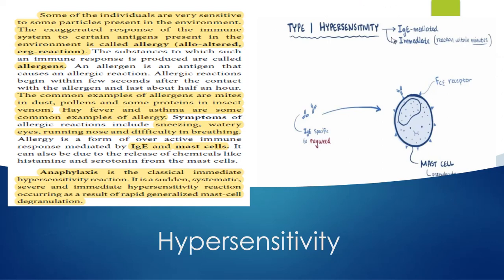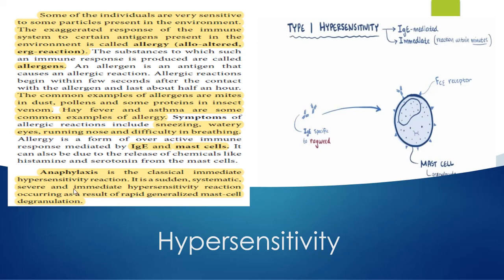Hypersensitivity is mediated by IgE. One immunoglobulin — IgE molecules and mast cells — is responsible for the hypersensitivity process. Sometimes hypersensitivity is severe and can even lead to the death of the individual. That condition is called anaphylaxis. Anaphylaxis is nothing but an immediate, sudden, systemic, severe hypersensitivity reaction.